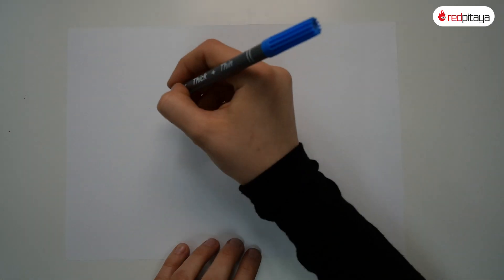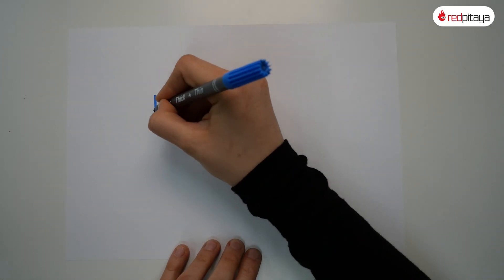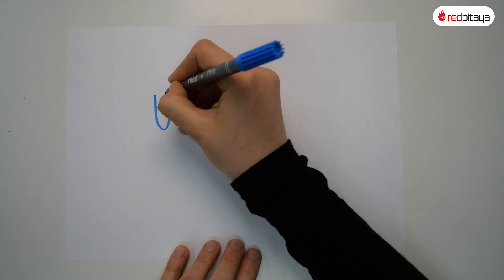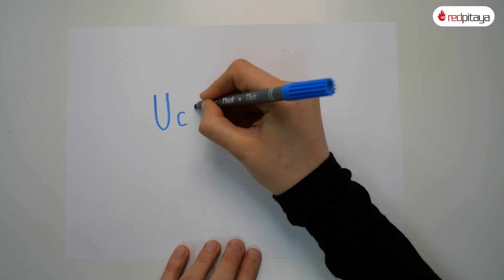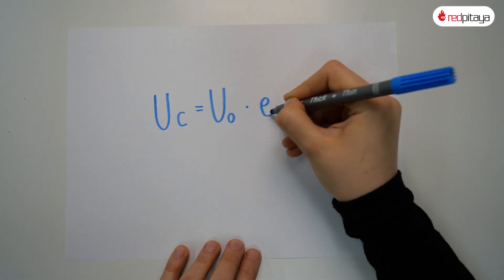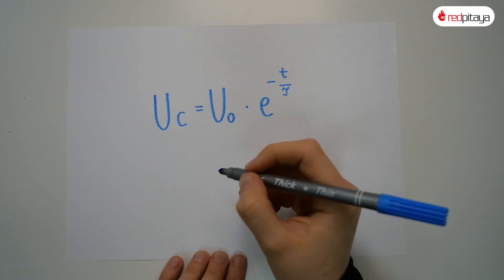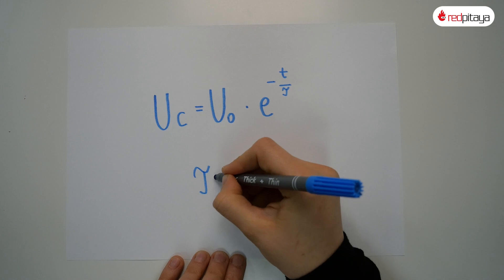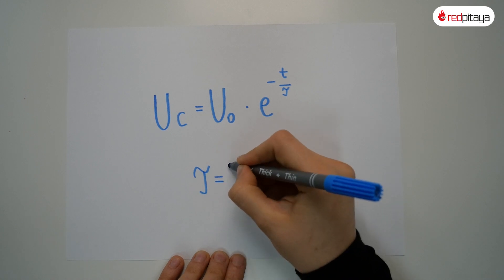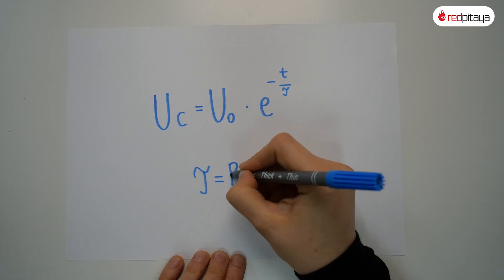Upon discharge, the equation is a bit different — like this. Tau is still resistance times capacitance.